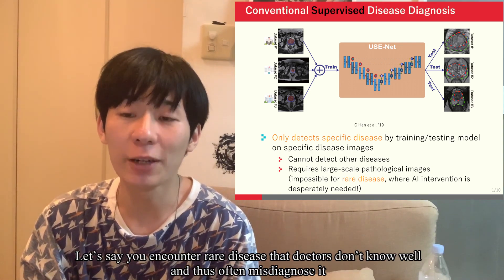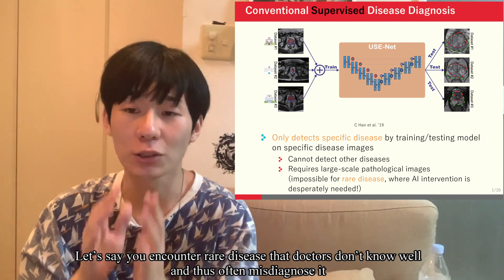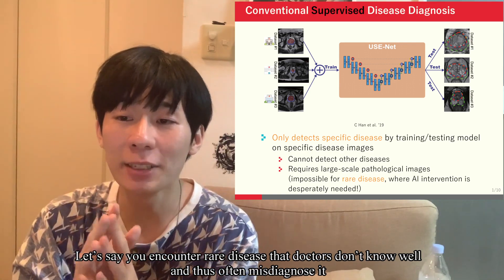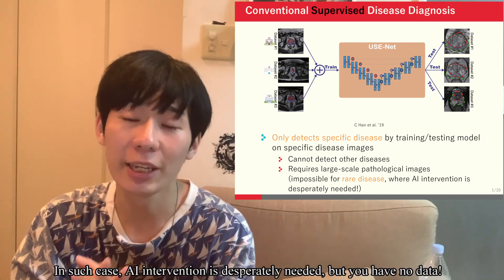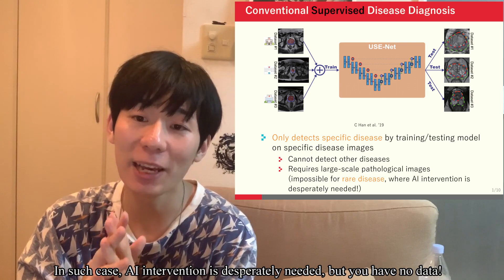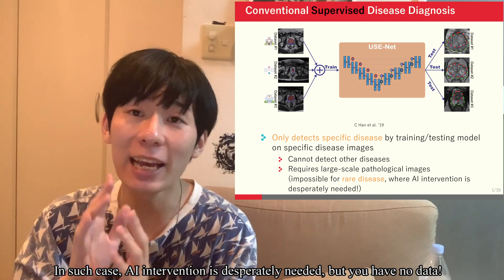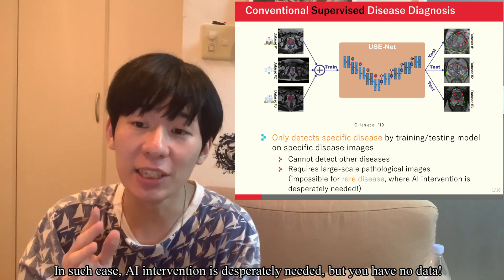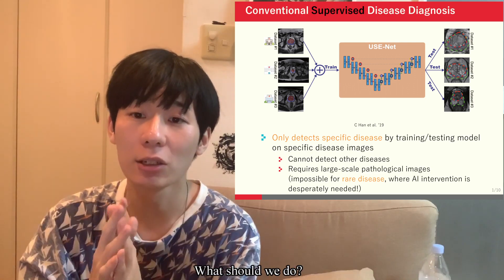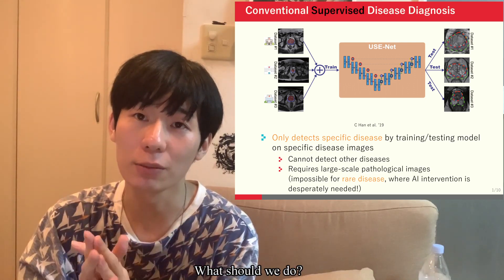Let's say you encounter a rare disease that doctors don't know well, and thus often misdiagnose. In such a case, AI intervention is desperately needed. But you have no data. What should we do?